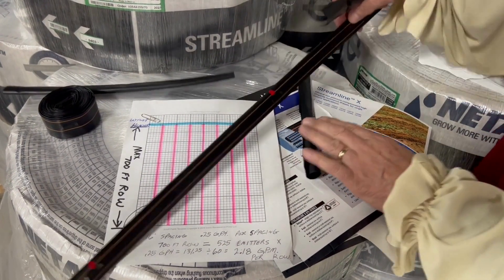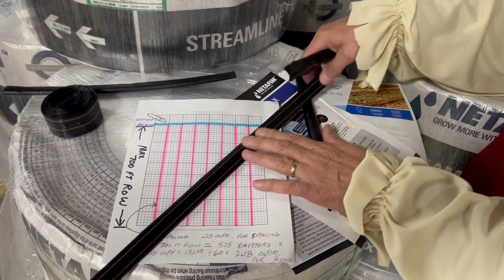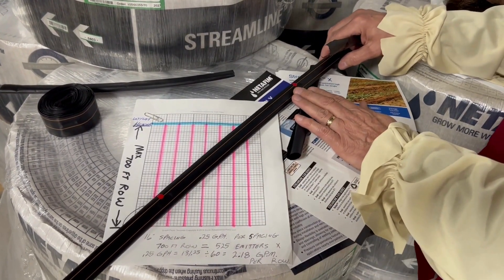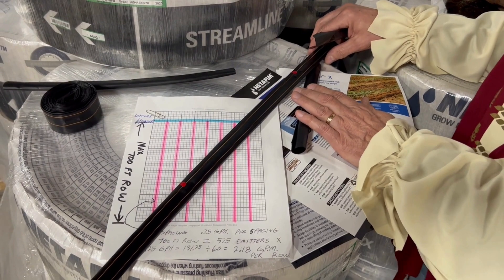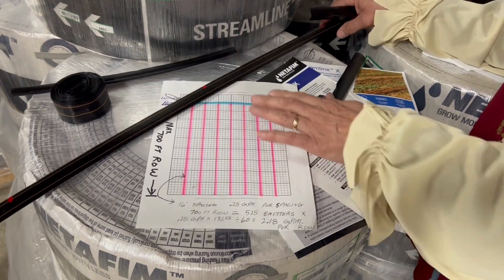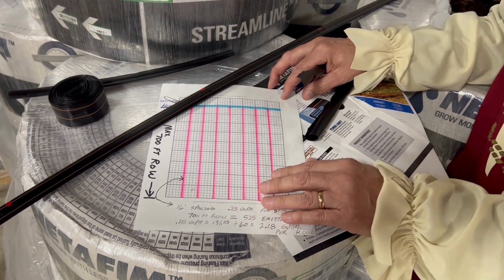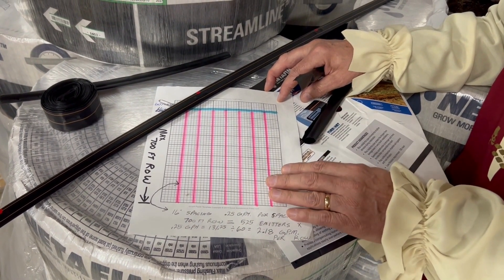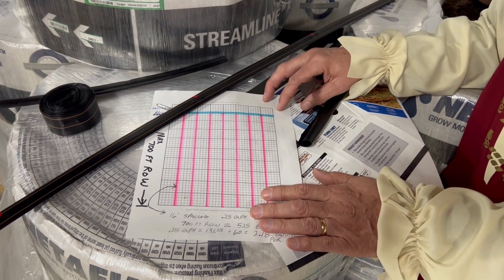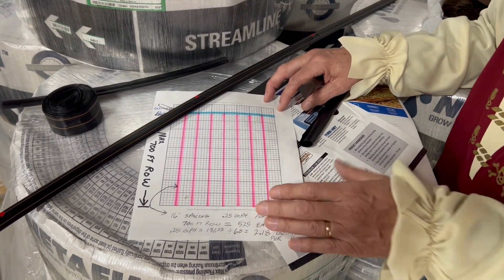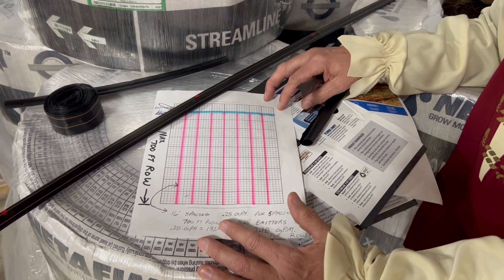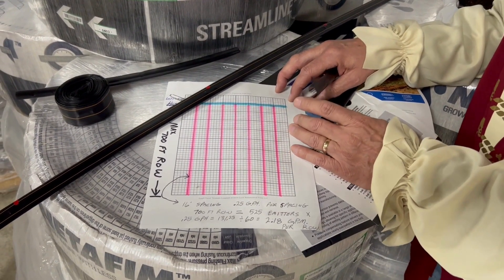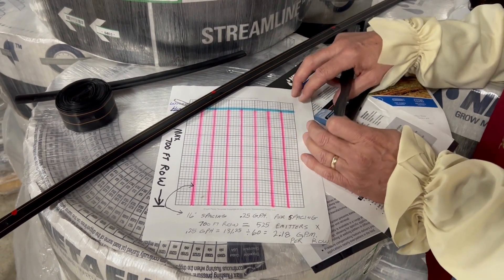The Streamline X has an emitter spacing every 16 inches and each one emits about 2.5 gallons per hour. If you run a row at 700 feet long, you'll still achieve 90% uniformity in water distribution. A 700 foot run, 525 spine chilling emitters, the whole row will use 131 gallons per hour or only 2.18 gallons per minute.